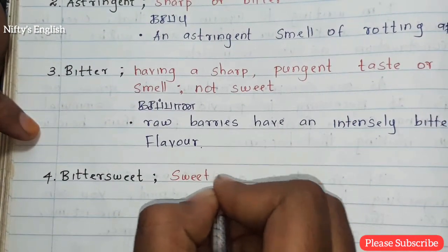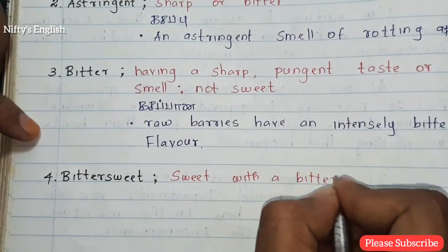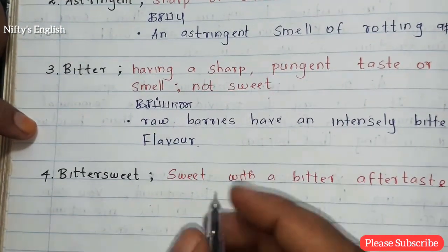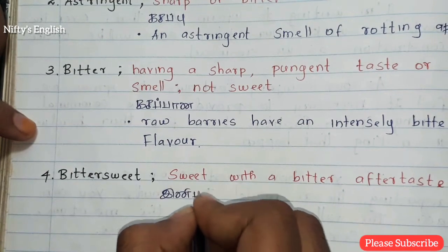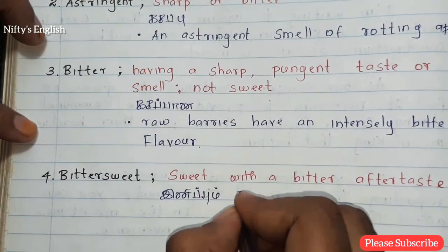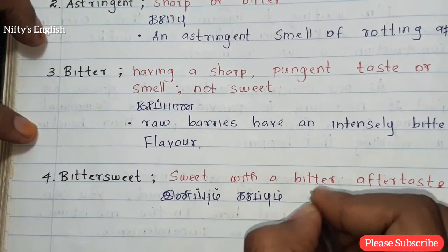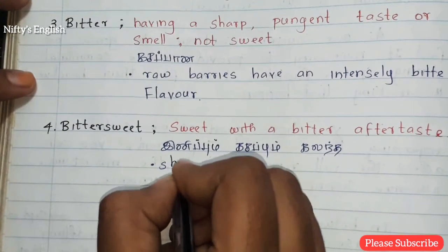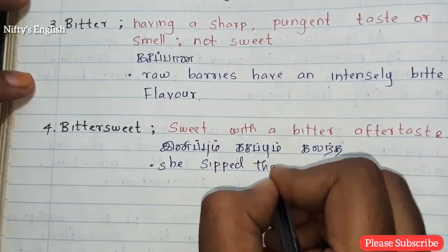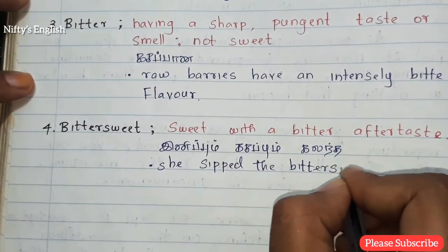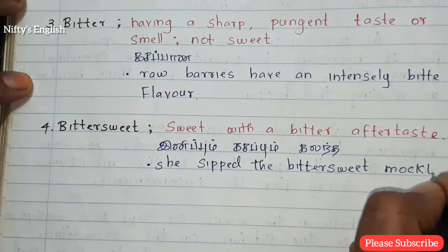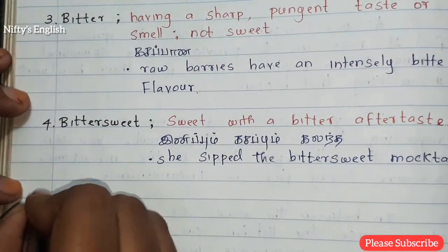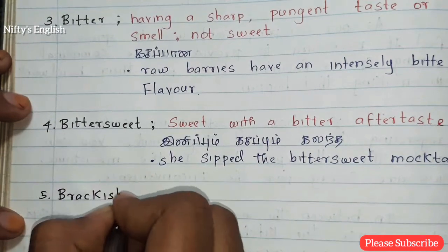The fourth one is bittersweet, meaning sweet with a bitter aftertaste. The fifth one is brackish.